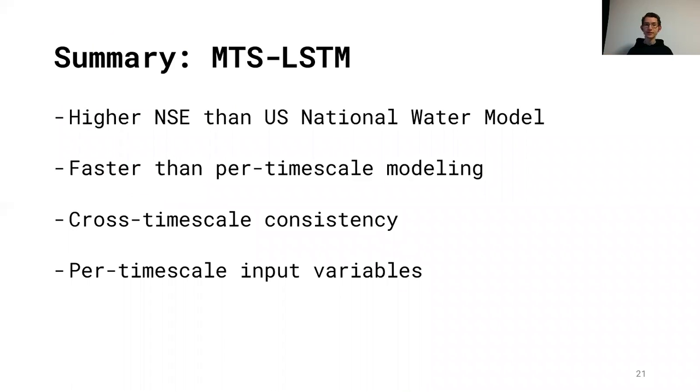And with that, I'd like to summarize. We've seen that on our benchmark, the multi-timescale LSTM had a much higher NSE than the US National Water Model. It had similar accuracy as the naive way of using LSTMs to predict at multiple timescales, but it generates these predictions much faster than the naive way. It also allows us to do additional features. So we have this cross-timescale consistency where we can incentivize the model to generate predictions that are consistent across the different prediction timescales. And we can use different input variables at the different timescales.